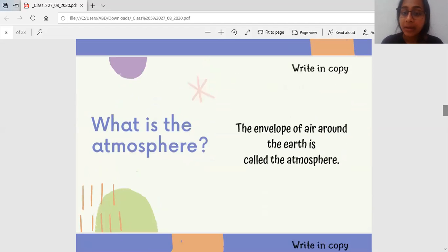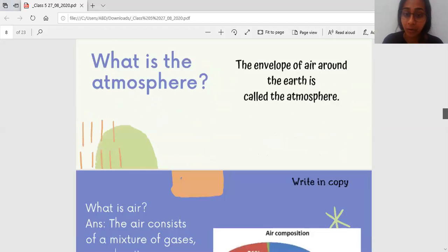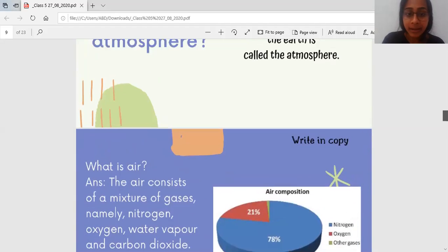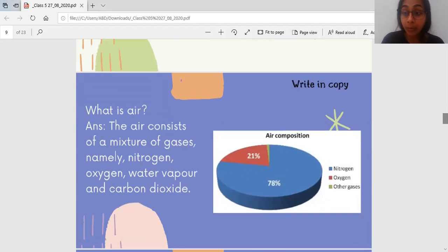What is the atmosphere? The atmosphere is the envelope of air around the earth. The entire air envelope means a covering. That is called the atmosphere. What is air? The air consists of a mixture of gases like nitrogen, oxygen, water vapor and carbon dioxide. Air is a mixture. There are gases like oxygen, nitrogen, water vapor and carbon dioxide.